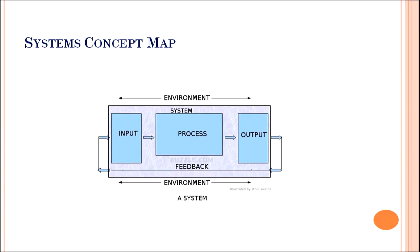Next is the systems concept map. When we talk about a systems concept map, we are basically talking about input, process, and output. For example, if we are talking about a war, the input can be causes leading to the war, the process is the actual event of the war, and the output is the consequences or results. Sometimes output gives feedback, and here the environment — that is, conditions leading to all of these — is very important.